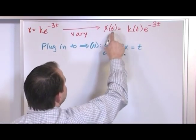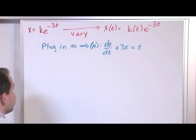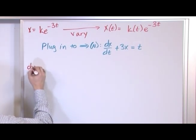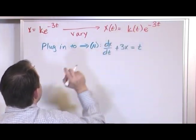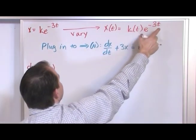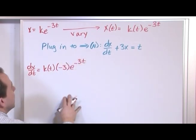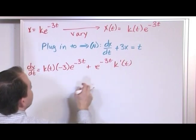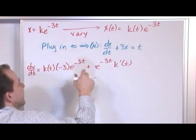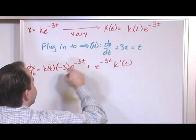In order to plug into this, we have x and we can plug that in, but we need to take the derivative in order to stick it in there. So let's calculate dx/dt. Taking the derivative of k(t)·e^(−3t) using the product rule: this times the derivative of this, plus this times the derivative of this. So we'll have k(t) times negative 3·e^(−3t), plus e^(−3t) times the derivative of k, which we just leave as k′(t) because we don't know what else to do with it. Now let's plug everything into the non-homogeneous equation.